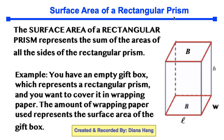That's why this is called a rectangular prism. Think of maybe an empty gift box that you want to wrap up. The amount of wrapping paper you're going to use to cover all the sides of your empty gift box — that is what is considered the surface area.